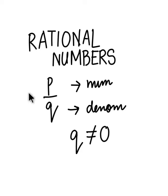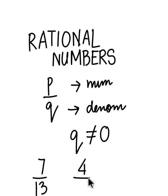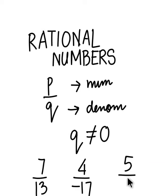For example, 7 by 13 is a rational number, or 4 by minus 17 is also a rational number. But if you have any number like 5 in the numerator and 0 in the denominator, then this number is not a rational number because you cannot have 0 as the denominator.